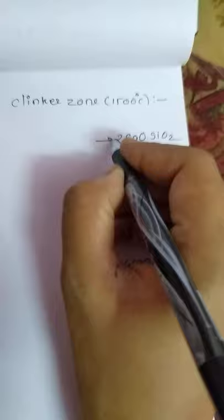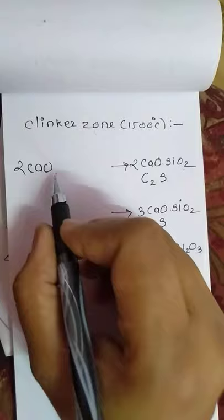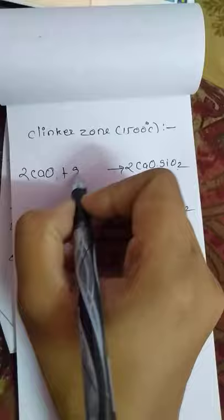Now how does this reaction happen? Based on their structure, you can easily write down the chemical reaction. Two molecules of CaO plus one molecule of SiO2 forms C2S clinker.